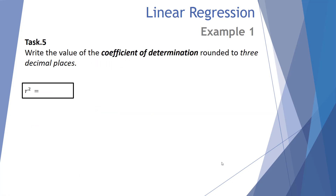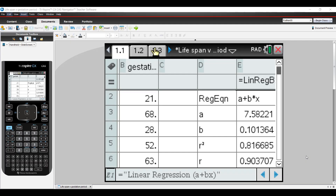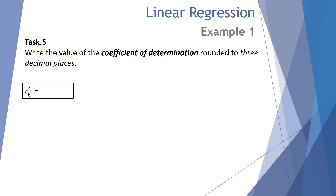Number five: write the value of the coefficient of determination rounded to three decimal places. The coefficient of determination has a value of r squared. We can square our r value, or go back to the TI-Inspire linear regression summary. The r squared value is 0.816685, which rounded to three significant figures is 0.817.